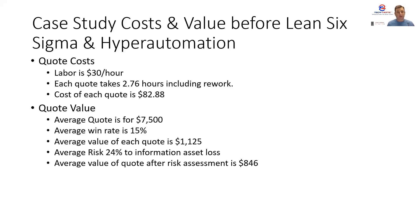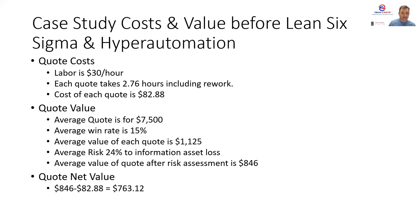The value on it was that each quote averaged about $7,500. The average win rate of each quote was 15%, so every quote they were putting out had an approximate value of $1,125. Unfortunately, they also had poor cybersecurity, which put them at about a 24% risk of losing this asset. Losing it — whether someone deletes it, the hardware fails, or they're hacked — means they'd have to go back and recreate it. When we add that risk factor in, the value comes all the way down to $846 for every quote. So when we subtract the cost from the value, each quote had a net value of $763.12.